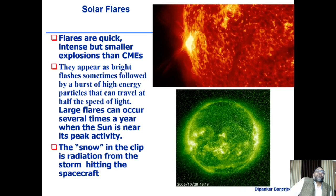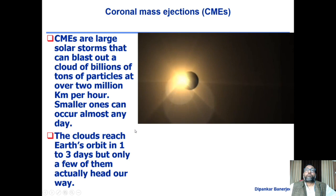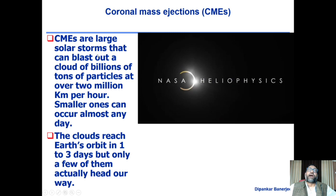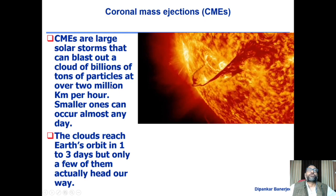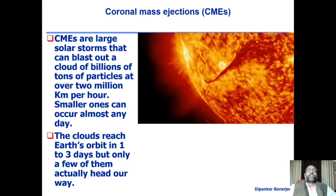The snow clip is radiation from the storm hitting the spacecraft. CMEs — coronal mass ejections — are large solar storms that can blast out a cloud with billions of tons of particles at over two million kilometers per hour. The smaller ones can occur almost any day. The clouds reach Earth's orbit in one to three days, but only a few actually head our way.